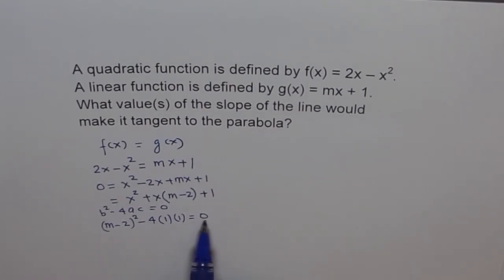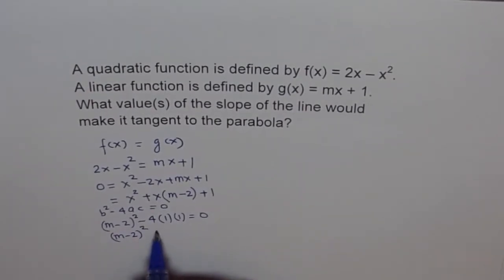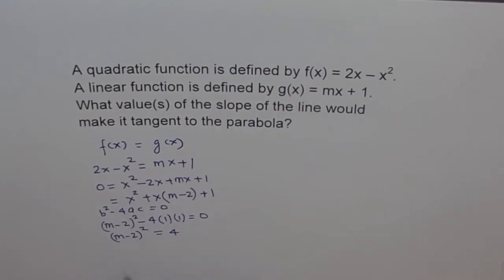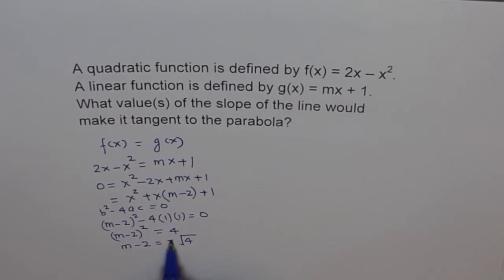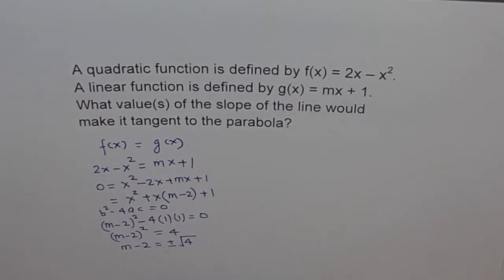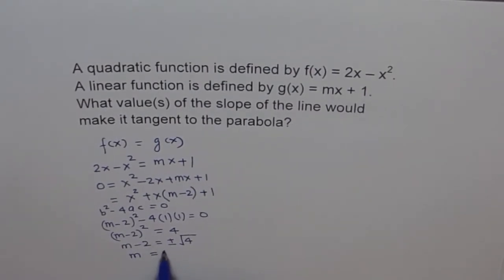To solve this, we take 4 to the other side: (m - 2)² = 4. Taking the square root of both sides — remembering to use plus and minus — we get m - 2 = ±2. Bringing 2 to the other side, m = 2 ± 2.